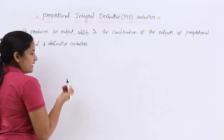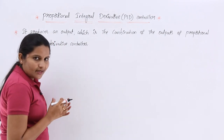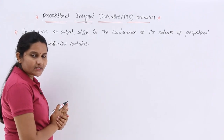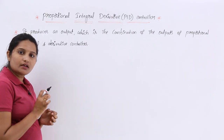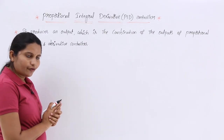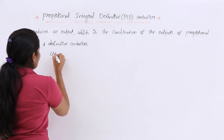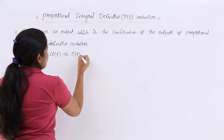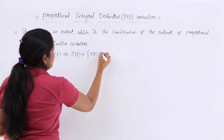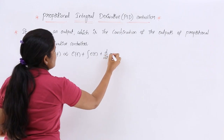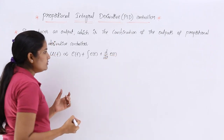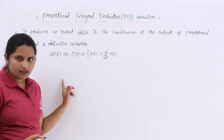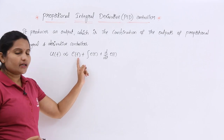For any controller, we represent the output of the controller as U(t) and the input for any controller is the error signal E(t). The output must be proportional to the proportional controller, integral controller, and differential controller. So we need to combine all the controllers. In the case of proportional controller, the output must be proportional to the error signal.